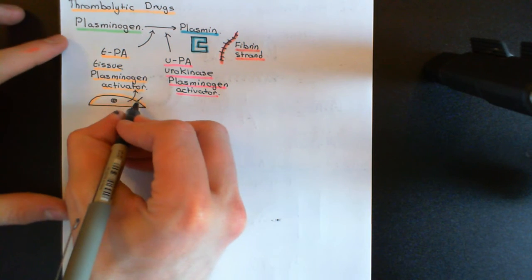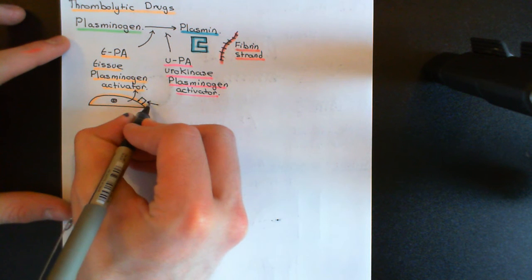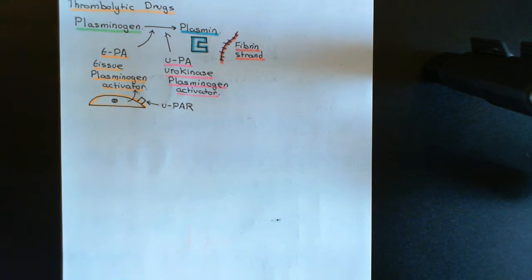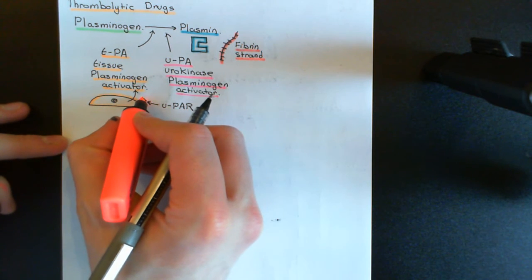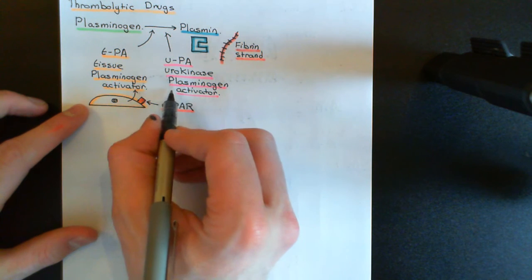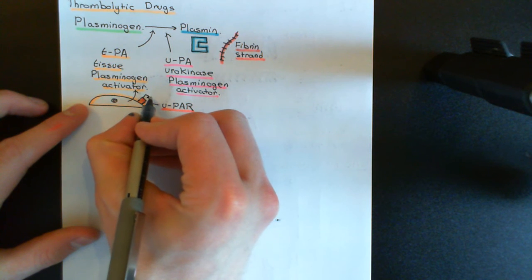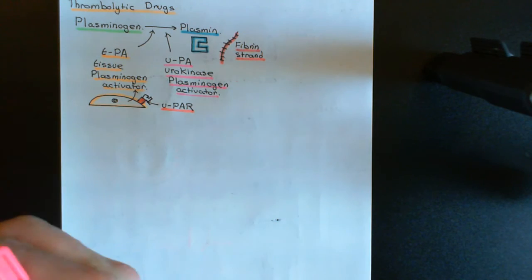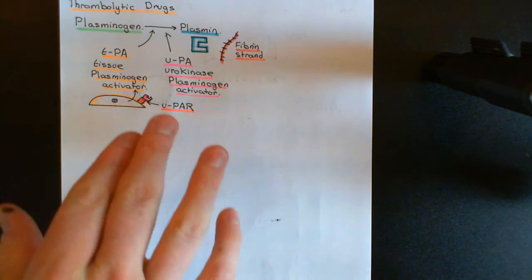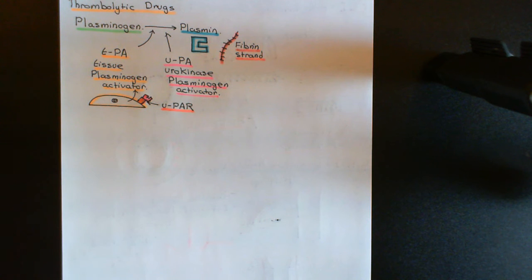What has to happen is UPA must bind to a receptor on the surface of endothelial cells near the blood clot, known as the urokinase plasminogen activating receptor (UPAR). These endothelial cells near blood clots have this receptor on their surface. When urokinase plasminogen activator binds onto it, it becomes active, and any plasminogen proteins passing by will then be activated to plasmin, which will lyse the fibrin meshwork of the blood clot and result in clot lysis.